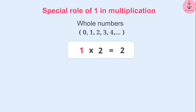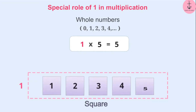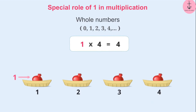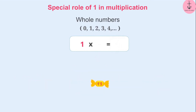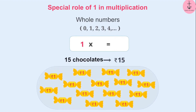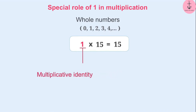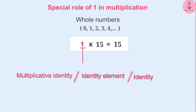We can see something similar in multiplication too. If any whole number is multiplied by 1 — for example, if there are 5 squares in a row, the total number of squares is obtained by multiplying 1 and 5, which is 5. There are 4 baskets; if 1 fruit is kept in each basket, then the number of fruits will be 1 multiplied by 4, which is 4. Similarly, if the cost of each chocolate is rupee 1, then the cost of 15 chocolates will be 15 rupees, because 1 multiplied by 15 is equal to 15. Since any number multiplied by 1 gives the same whole number, 1 is called an identity for multiplication of whole numbers — the multiplicative identity, also called an identity element, or simply identity.